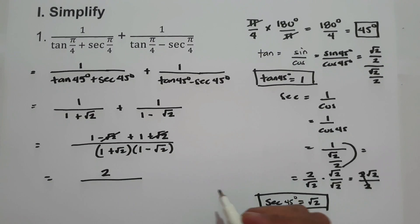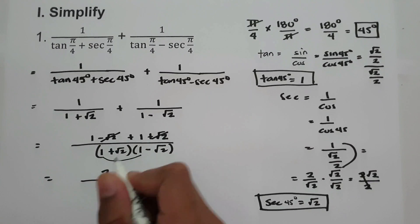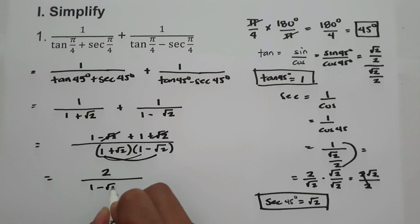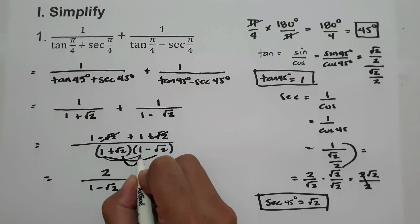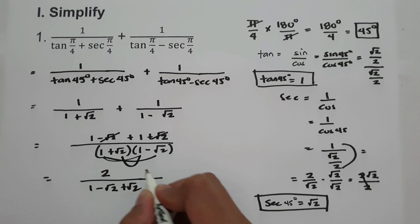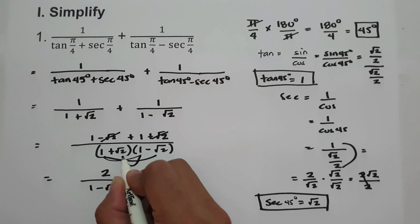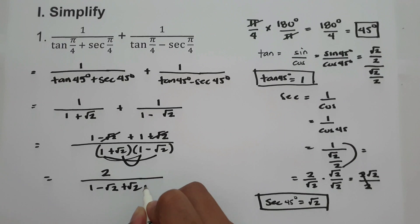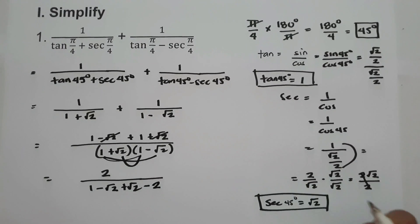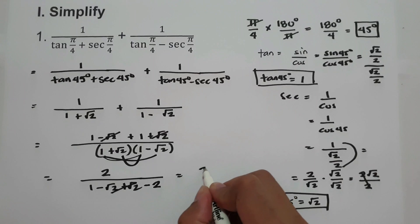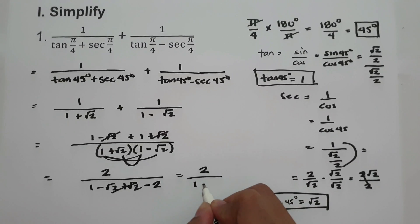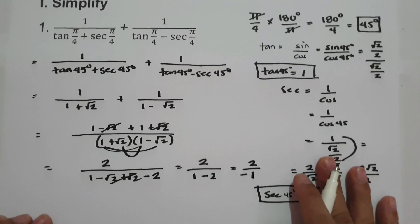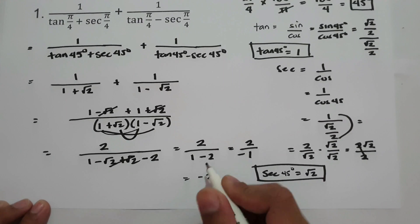Now let us use the FOIL method to simplify the denominator (1 + √2)(1 − √2). 1 times 1 is 1, 1 times −√2 is −√2, √2 times 1 is √2, and √2 times −√2 is −√4 = −2. The middle terms cancel, giving 1 − 2 = −1. So we have 2 over −1, and our final answer is −2.